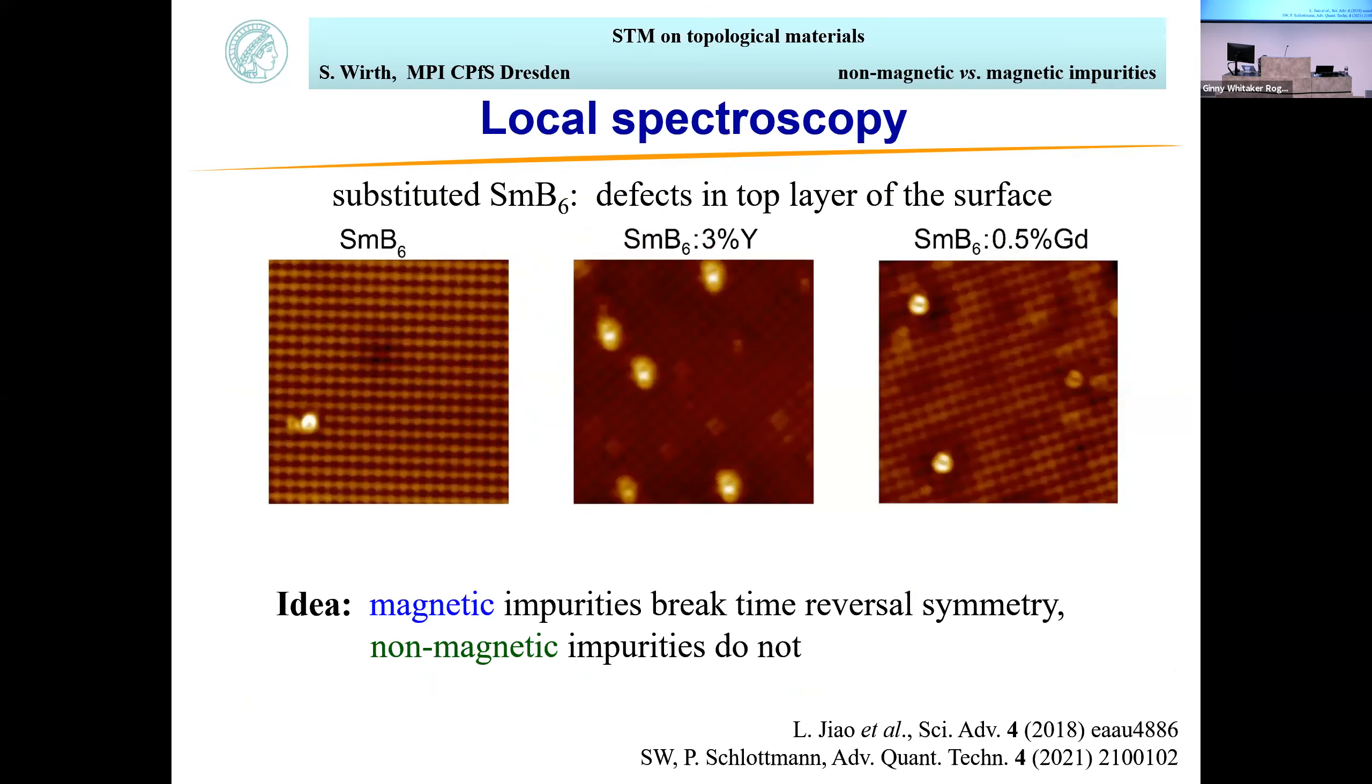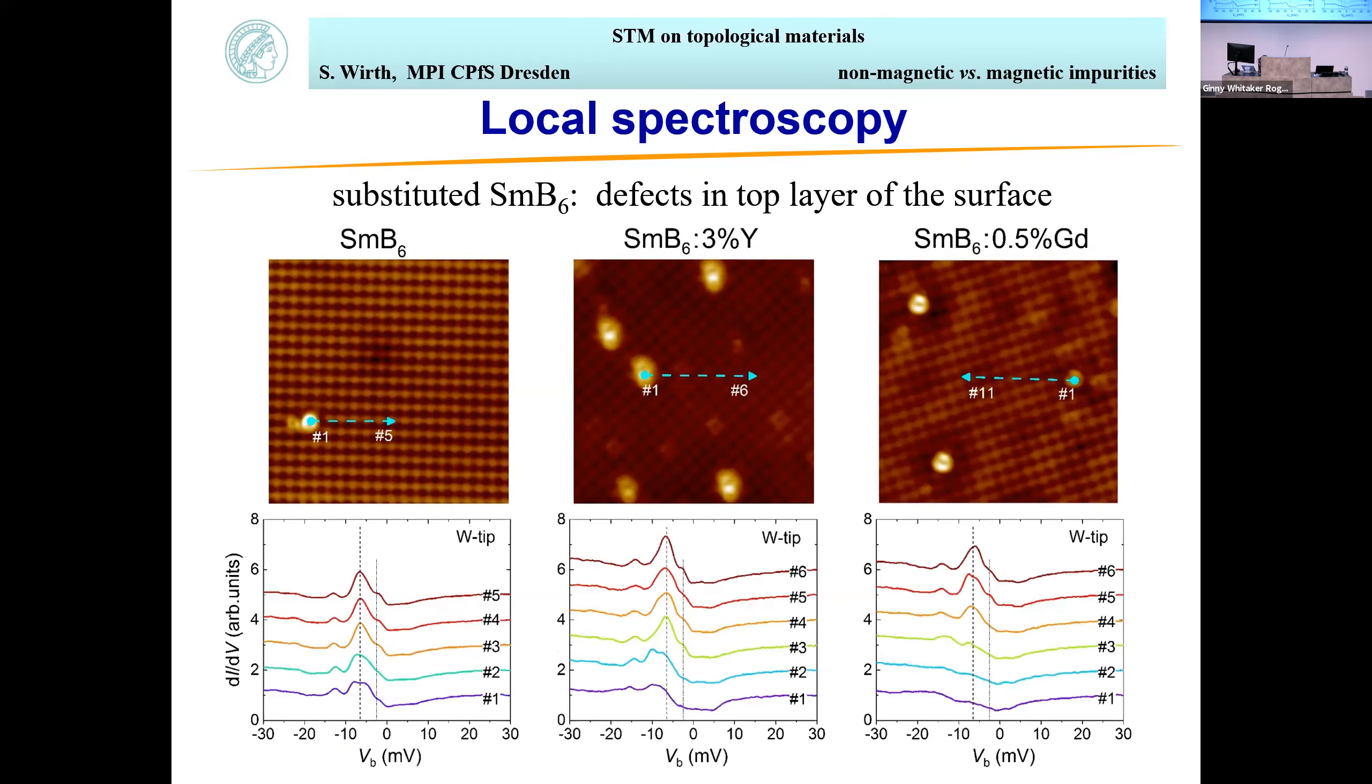I mentioned we want to look at the topography. Our idea was to see what happens if you put in magnetic impurities. If the surface states are topological in nature, breaking time reversal symmetry should affect the surface states compared to non-magnetic impurities or defects in pure samarium hexaboride.